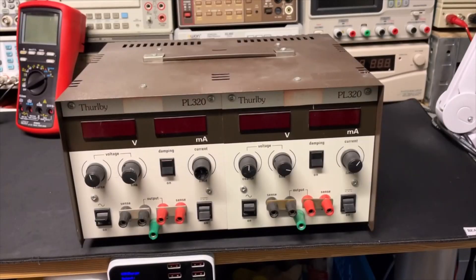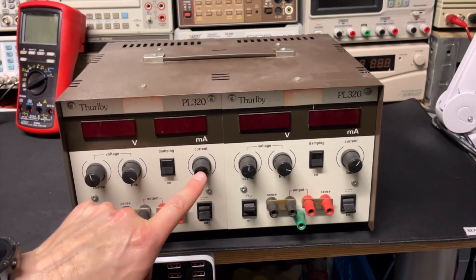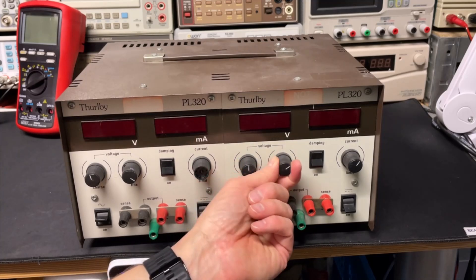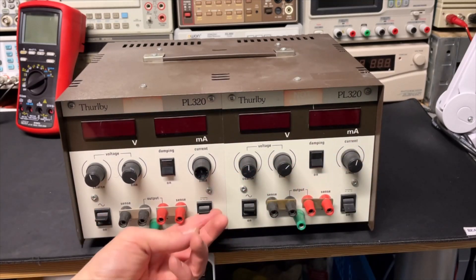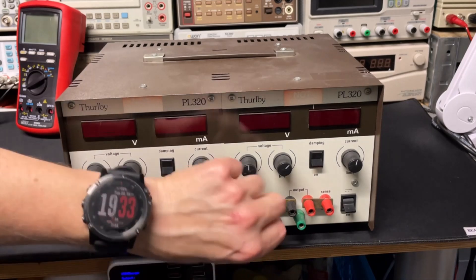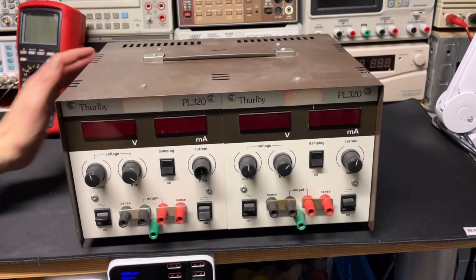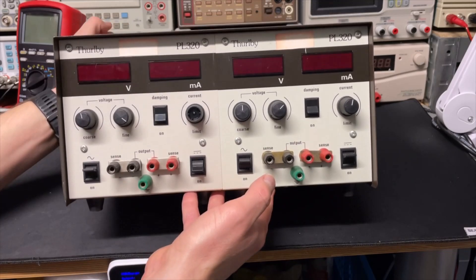It is the Thurlby and it's the PL320, and I think it goes to 30 volts and two or three amps. And it's a double power supply and you can actually see in the front they just have two together separate power and it still looks very good here it is.